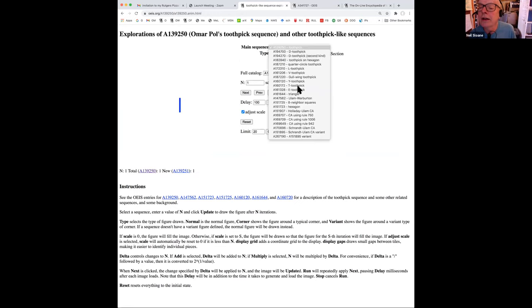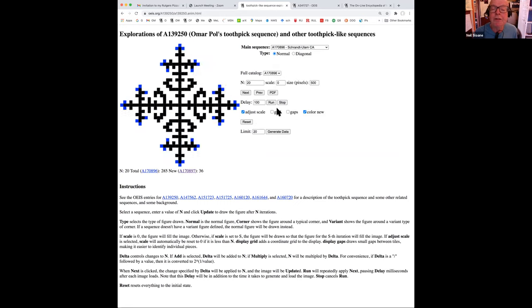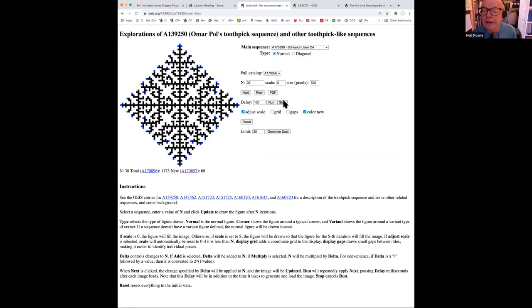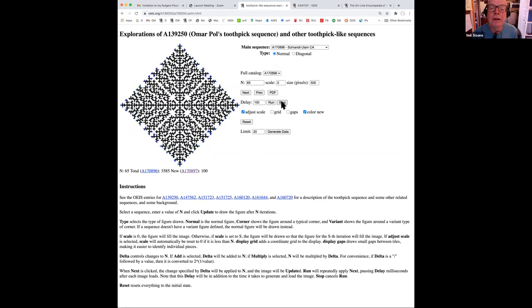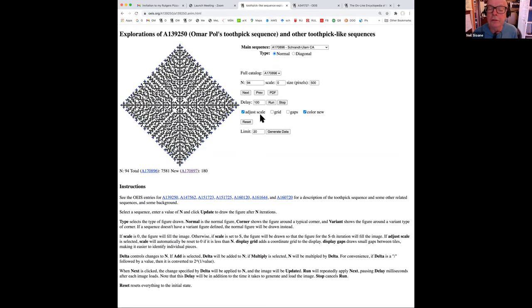So let me now show you, there's one more I want to show you. The Schrant Ulam cellular automaton is also done on the square grid with slightly different rules. It grows rather like the first one, but we have not been able to analyze it. And Ulam himself couldn't analyze it. So let me switch over now to my slides.